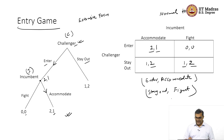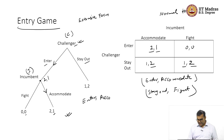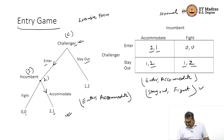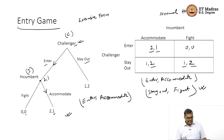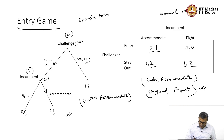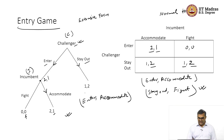These are the two Nash equilibria. From backward induction we got enter-accommodate. We see that there is an additional Nash equilibrium, stay out-fight. In that equilibrium, the challenger moves directly to stay out because it is worried that fight would happen, giving it a payoff of 0, while staying out gives 1. So the challenger stays out right from the beginning. But this does not look credible.